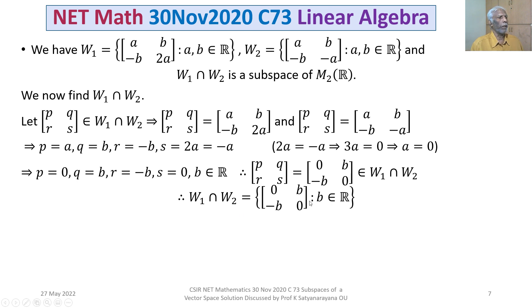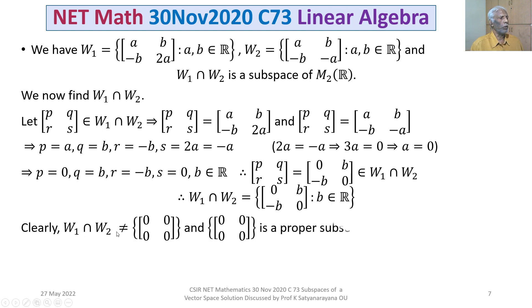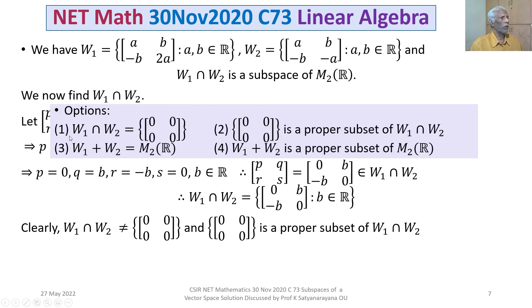So W1 ∩ W2 consists of all 2×2 matrices of the form [0, B; -B, 0] where B belongs to R, and it is a subspace. Since B is arbitrary, W1 ∩ W2 contains infinitely many matrices besides the zero matrix. Therefore W1 ∩ W2 is not just the zero matrix, so option 1 is not true, and option 2 is true.